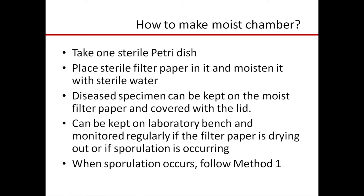Keep the moist chamber on the laboratory bench and monitor the filter paper to check whether it is getting dried or whether sporulation is occurring on the leaf surface. When sporulation occurs, follow Method 1: use a sterile inoculation needle to touch the spores and streak on the medium in a Petri dish or slant. Alternatively, stab the needle into growth medium so that some medium gets attached, then use that media-covered needle to touch the spores, dislodge them from the spore-bearing structures, and streak onto the Petri dish or slant.